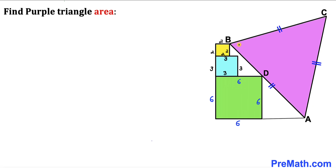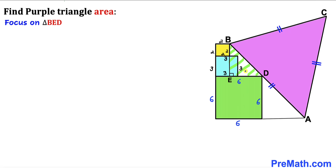Now let's make an observation. Points B and D are the points of contact. I have dropped a perpendicular from B such that we get right triangle BED. Focusing on this right triangle BED, we can see that side length BE is going to be 2 plus 3, which equals 5 units.